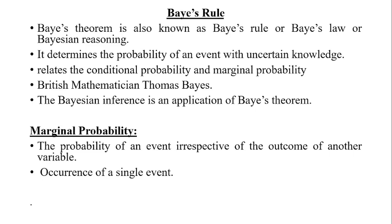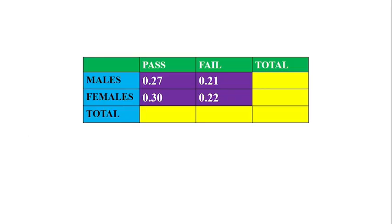Before moving to Bayes' theorem, let us see some terminologies from probability theory. First is marginal probability. Marginal probability is the probability of an event irrespective of the outcome of another variable. It is an occurrence of a single event. Let's see an example.